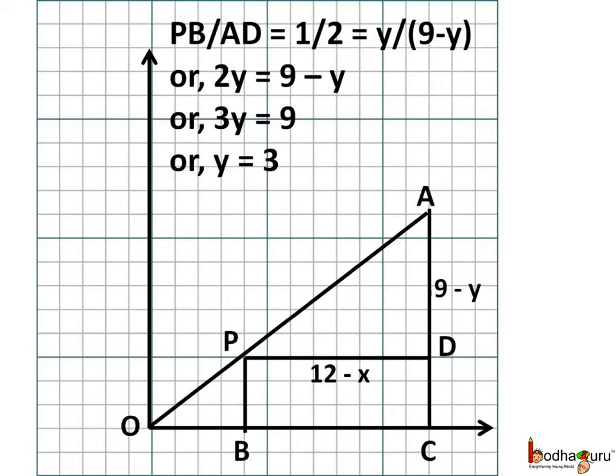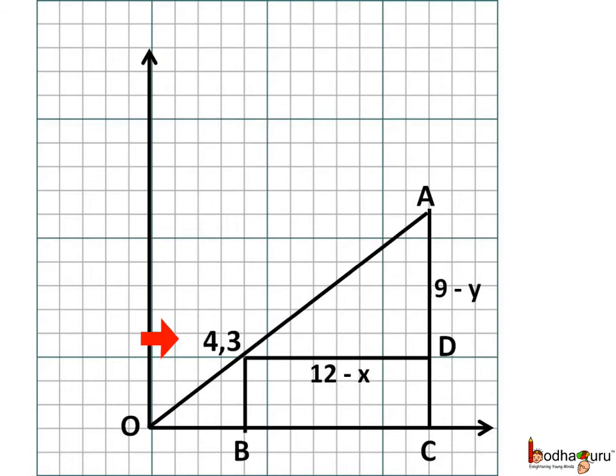So the coordinate of the truck with respect to factory is 4 kilometer east and 3 kilometer north. If we apply the distance formula it would be 5 kilometer northeast.